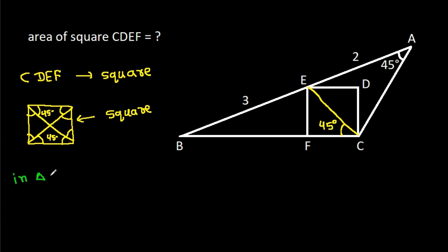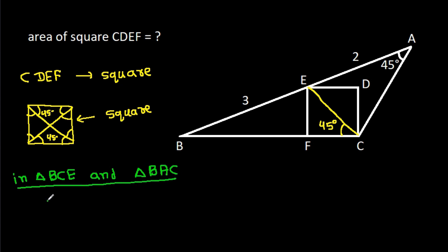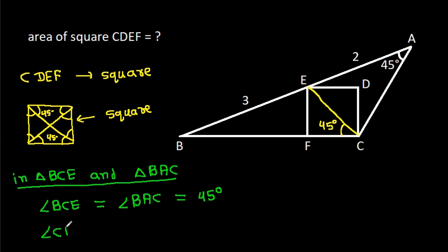In triangle BCE and triangle BAC, we have angle BCE equal to angle BAC, that is 45 degrees. And angle CBE is equal to angle ABC, which is common.